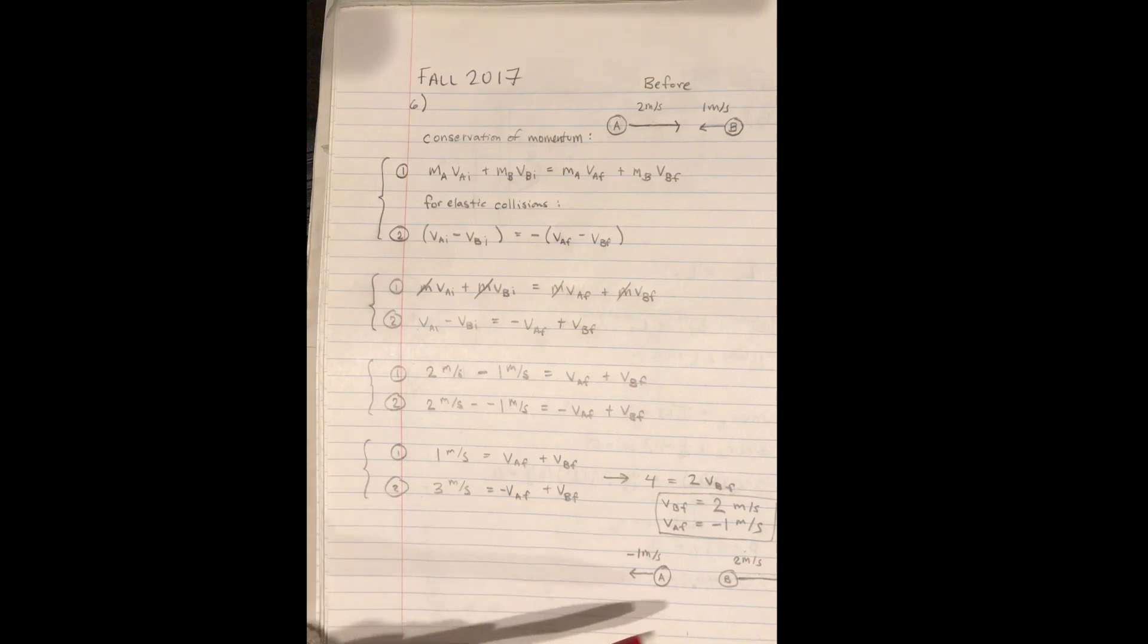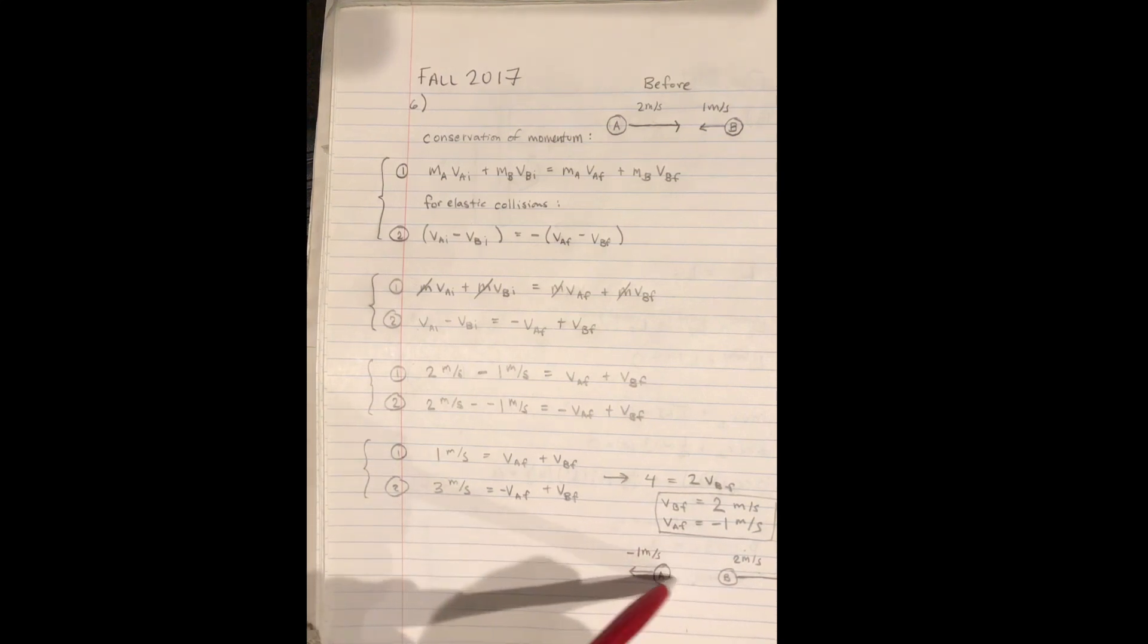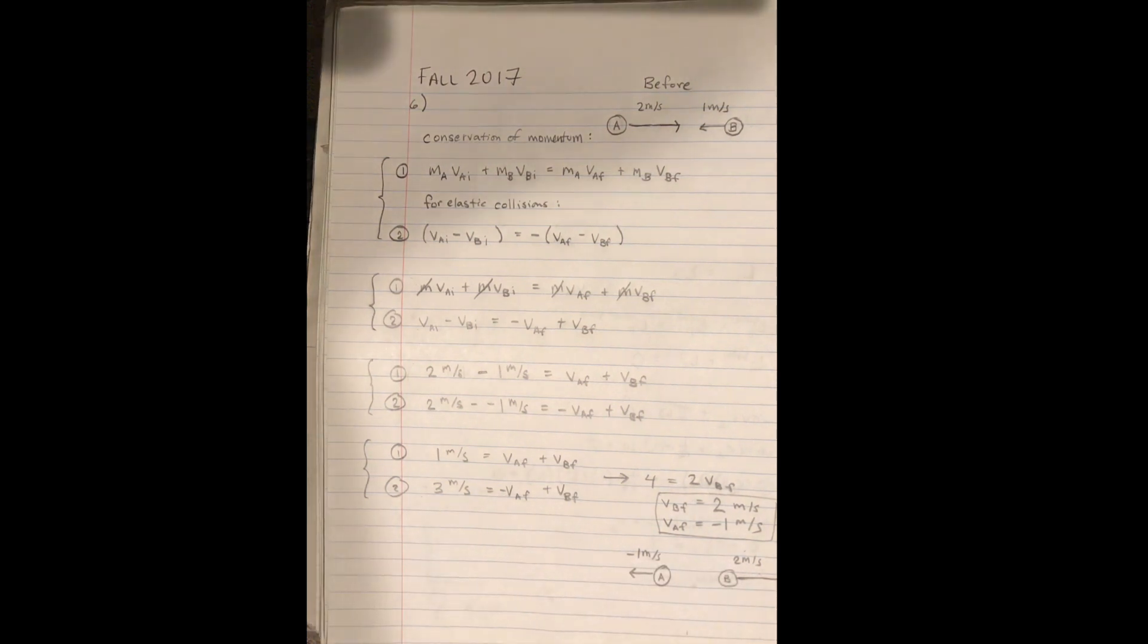And so we see that the solution is that A is going one meter per second to the left now and B is going two meters per second to the right. And that is the final situation after the collision and the solution to the problem.